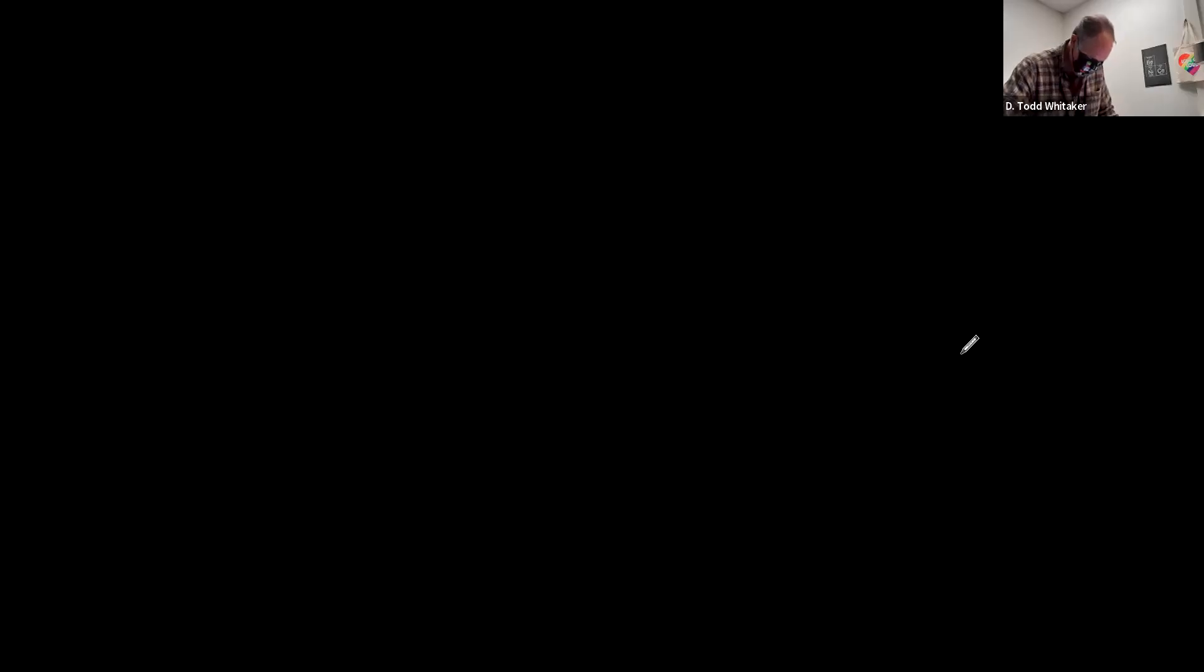The big finish. This was a terrible percent yield. We got 0.0769 percent. You would be fired. I surmised that there was a gas leak and that hydrogen volume was incorrectly measured. And that's it for today and time to start studying if you haven't done so already.